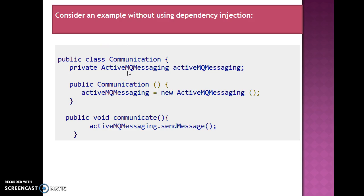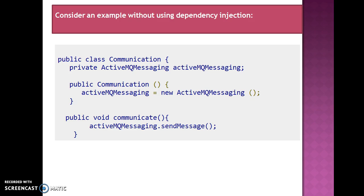Consider an example: suppose you have an application which has a communication component and you want to provide ActiveMQ messaging. Your standard code would look like this. We have created a Communication class, declared ActiveMQ as an instance variable, and instantiated ActiveMQ messaging within the Communication constructor. Communication has a method called 'communicate', so we are making a call to ActiveMQ messaging from within this class. What we have done here is created a dependency between Communication and ActiveMQ messaging.